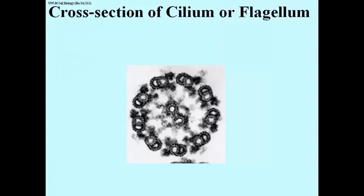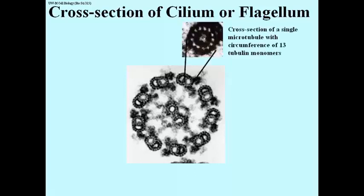This is a cross-section of a cilium or a flagellum — it can be either one, because in eukaryotes, cilia and flagella show the same cross-sectional structure of microtubules. Here is our cross-section of a single microtubule, with its 13 tubulin monomers as an inset, showing that in the cross-section of a cilium or flagellum there are many microtubules.